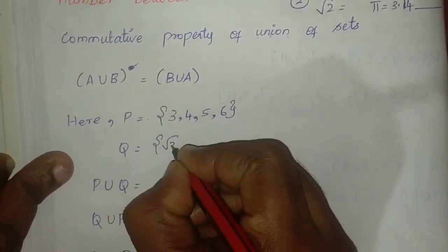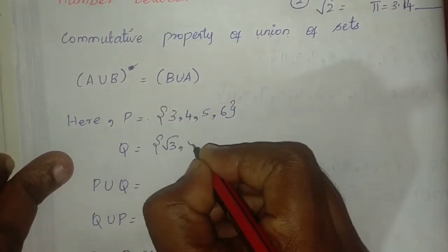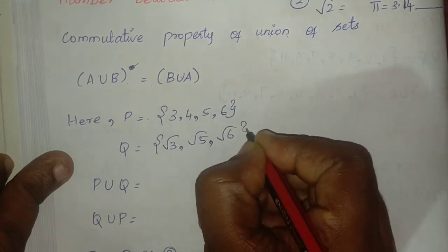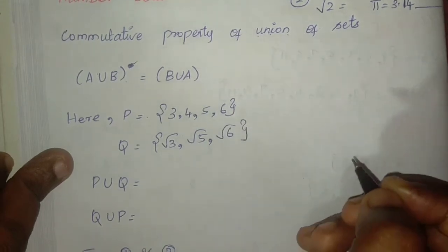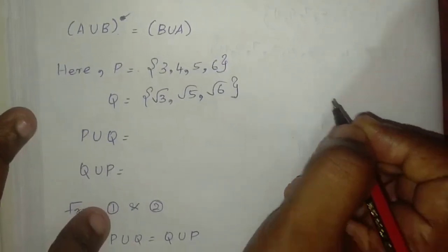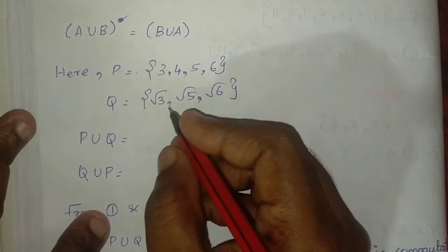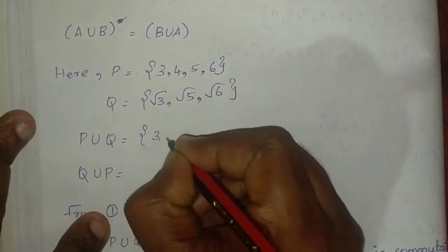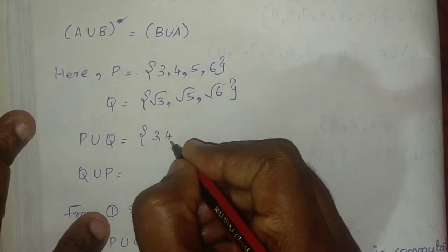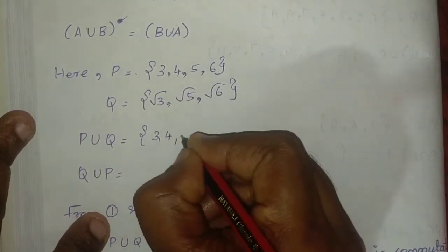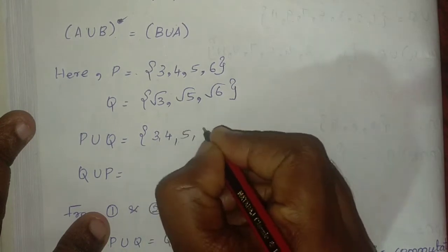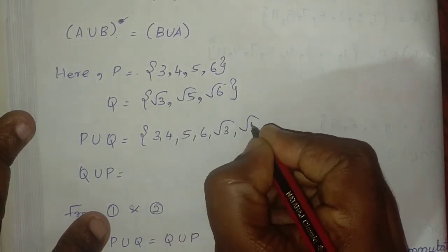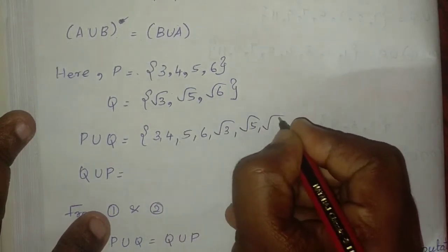Q equals the set {root 3, root 5, root 6}. Now, P union Q equals {3, 4, 5, 6, root 3, root 5, root 6}.